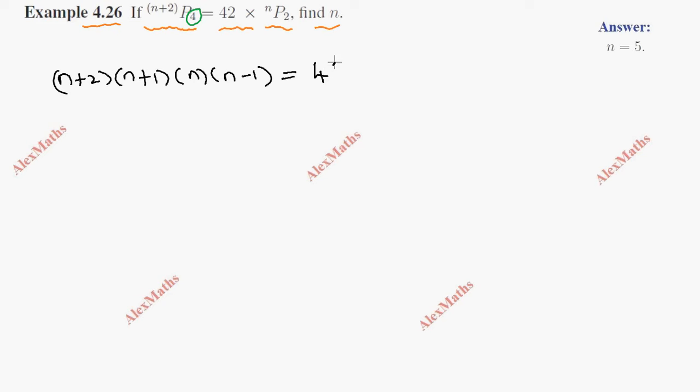This equals 42 times n(n-1). Now we can cancel n(n-1) from both sides. We can also use a shortcut method instead of fully factorizing.